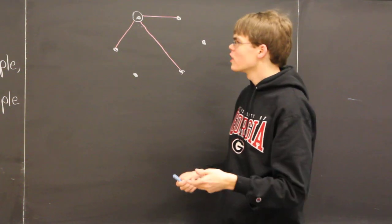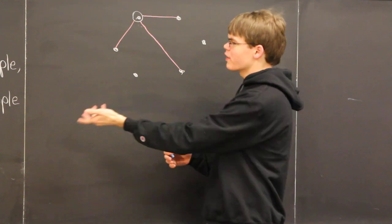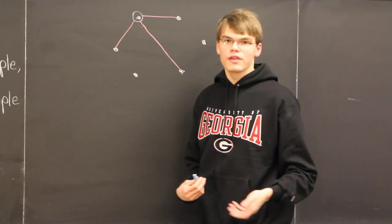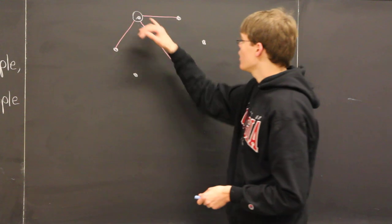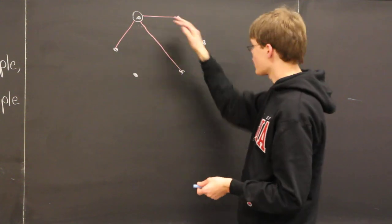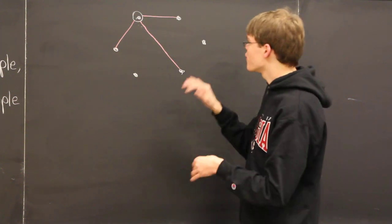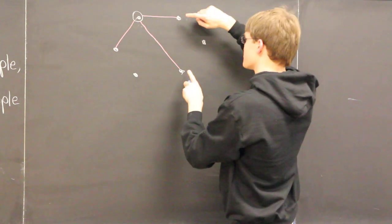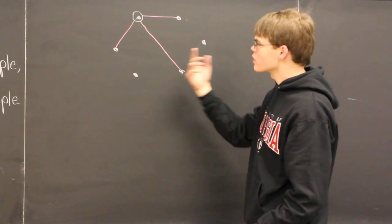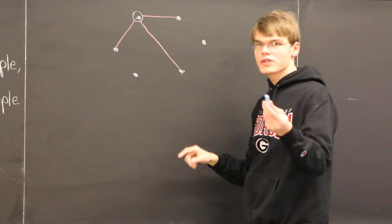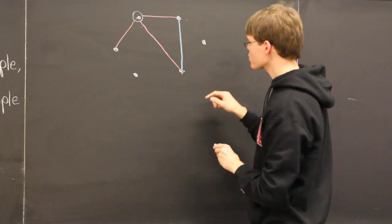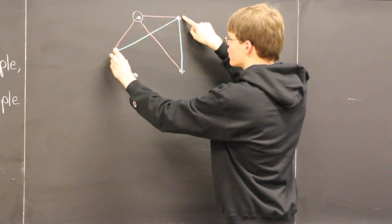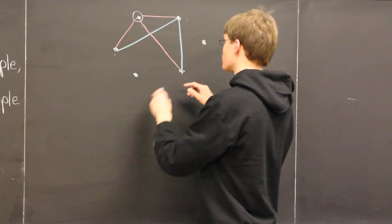We proceed by assuming for the sake of contradiction that there do not exist three mutual friends or three mutual strangers. Recall that if we have a monochromatic triangle, we're finished. So to avoid that, we know that this guy is friends with this guy, and this guy is friends with this guy. To avoid a monochromatic triangle, we're forced to color the line segment between those two blue. By the same argument, since this guy is friends with this guy, we're forced to draw this line segment blue. And lastly, by the same argument, we're forced to draw this last line segment blue.